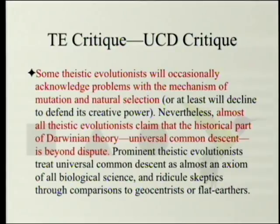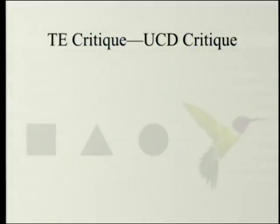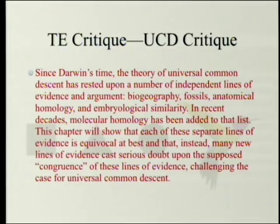The chapter's introduction repeats much of that summary. Prominent theistic evolutionists treat universal common descent as almost an axiom of all biological science and ridicule skeptics through comparisons to geocentrists or flat earthers. I suspect what happened was that they required a summary of each chapter, and he had the summary already in his book, so he just shortened it and put it in.